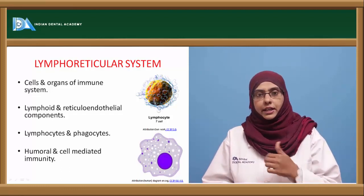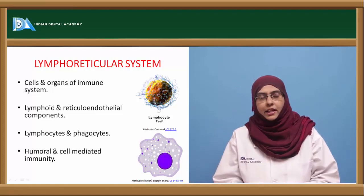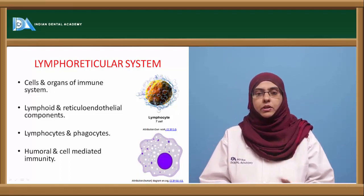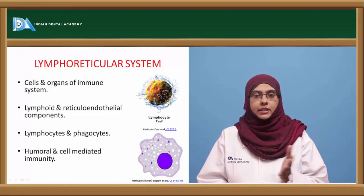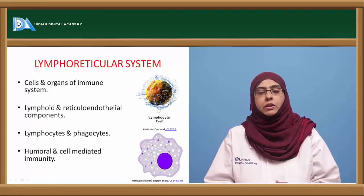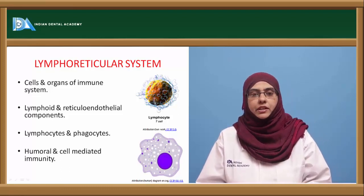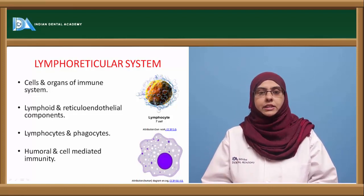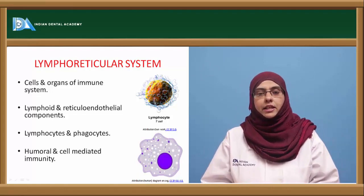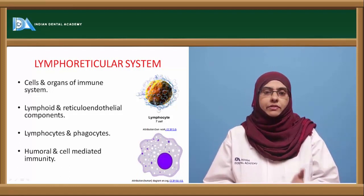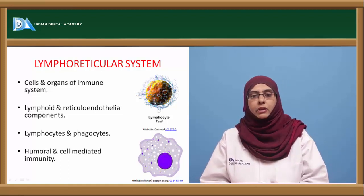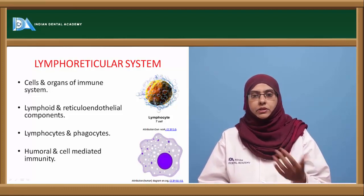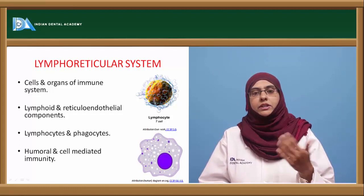The lymphoreticular system consists of two important components: one is the lymphoid cell and the other is called the reticuloendothelial component. The lymphoid cells — lymphocytes and plasma cells — belong to specific immunity, that is adaptive or acquired immunity. The reticuloendothelial system consists of phagocytic cells, which are able to ingest pathogenic microorganisms and inactivate the antigen, belonging to innate or non-specific immune mechanisms.